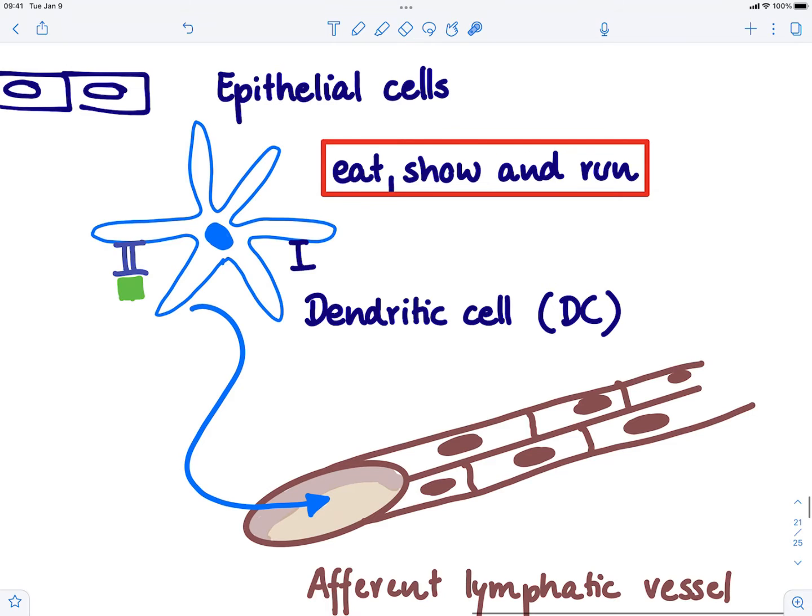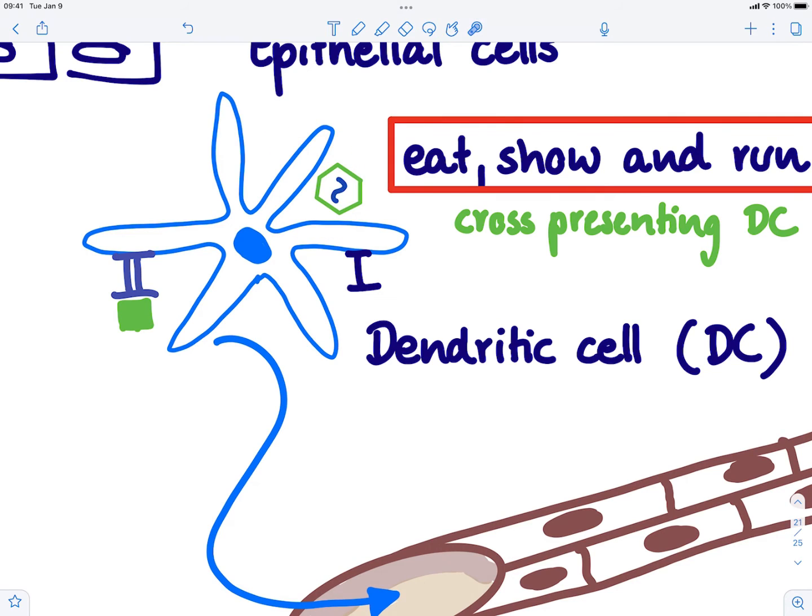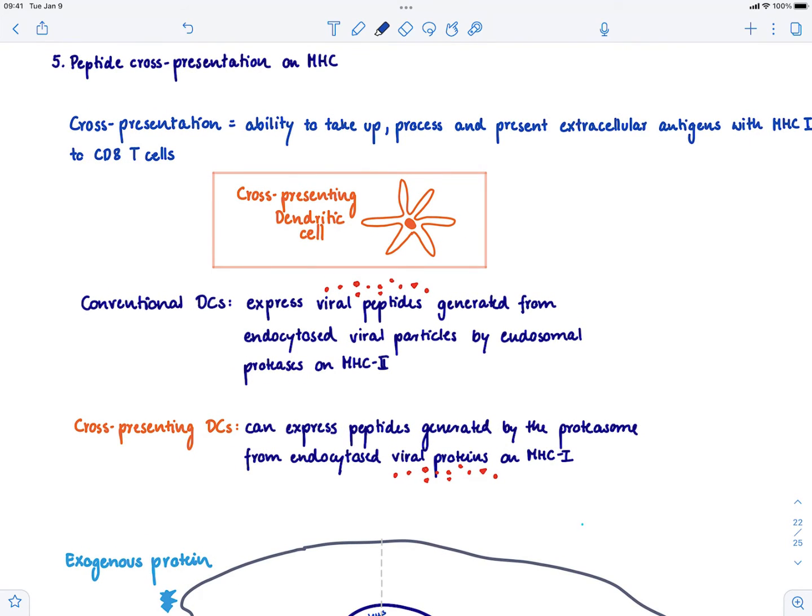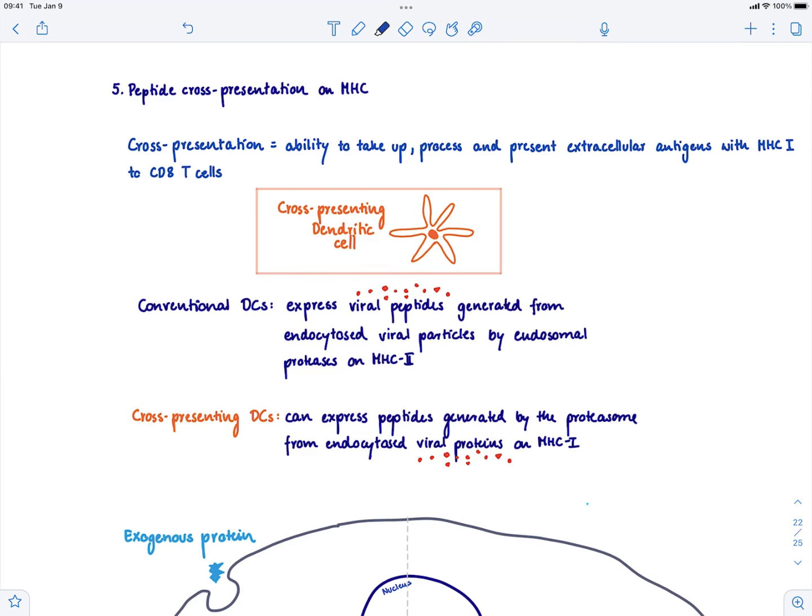Now, fortunately, we have something that is called cross-presenting dendritic cell. And what is cross-presentation? Well, cross-presentation is a potential to present exogenous proteins on MHC 1. It turns out the dendritic cell has this potential to, even if it's not infected and found it just extracellularly, phagocytose it and then still show it on MHC 1, even if it's not infected. So to write this: cross-presentation is the ability to take, process and present extracellular antigens with MHC 1 to CD8 T cells. And that's something only the so-called cross-presenting dendritic cell can do.